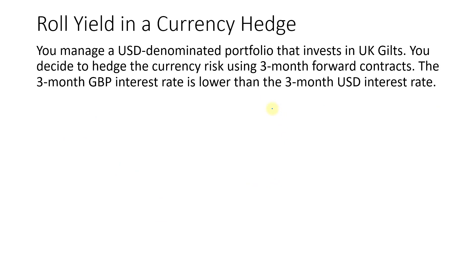Now let's change the story. Let's say you manage a dollar-denominated portfolio that invests in UK gilts — UK government bonds — and you decide to hedge the currency risk using 3-month forward contracts. The 3-month pound rate is still lower than the 3-month US dollar interest rate. Now the domestic currency is US dollar and the foreign currency is pound, which we set as our base currency. Because the base currency (pound) has a lower rate, pound will be trading at a forward premium.